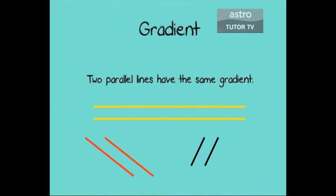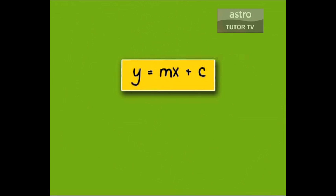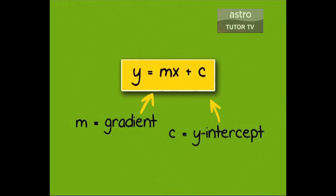You need to remember the equation for a straight line. Once you know the gradient, it's easy to form the equation for a straight line. Just use this formula: y equals mx plus c, where m is the gradient and c is the y-intercept.